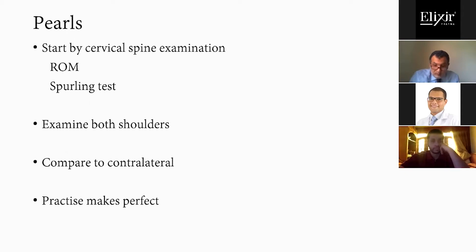Always start by cervical spine examination, especially in patients complaining of shoulder pain, since most problems in the cervical spine — especially radiating to C5 — may mimic problems in the shoulder. Always expose both shoulders and examine them, comparing to the contralateral side. As always with examination, practice makes perfect.